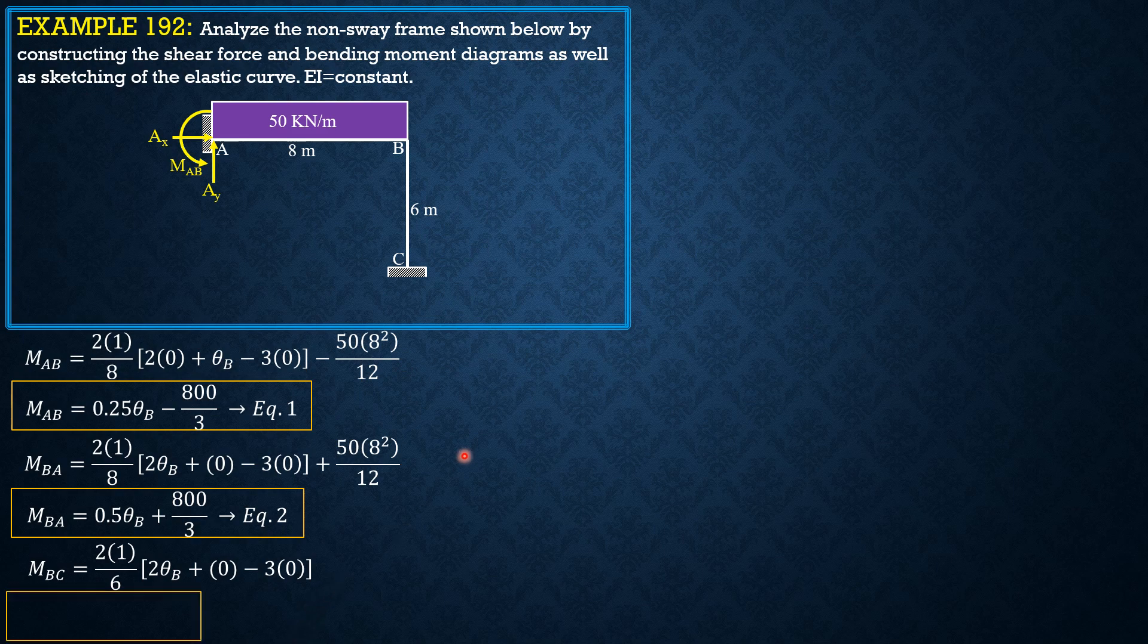There is no side sway, there is no load, so no fixed end moments. Simplifying, MBC equals two-thirds θB, Equation 3. Then finally, MCB is just θB over 3. So I want you to set up this: quantity 2θC (which is 0) plus θB, so that's why you have one-third θB, Equation 4.